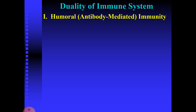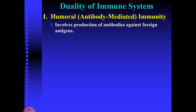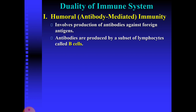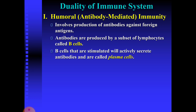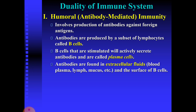The immune system exhibits two modes of immunity: humoral immunity and cell-mediated immunity. Humoral immunity is mediated by antibodies and involves production of antibodies against foreign antigens. The antibodies are produced by a subset of lymphocytes called B cells. B cells that are stimulated to actively secrete antibodies are called plasma cells. Antibodies are found in extracellular fluids like blood plasma, lymph, and mucus, and on the surface of B cells.